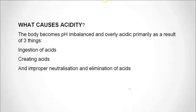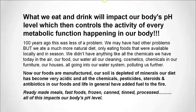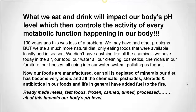A hundred years ago this was less of a problem. We ate a much more natural diet — only foods available locally and in season. We didn't have anything like the chemicals we have today in the air, our food, our water, cleaning products, cosmetics, chemicals in our furniture, our houses, paint — all going into our water system and polluting us further. Now our foods are manufactured, our soil is depleted of minerals, our diet has become very acidic, and pesticides, steroids, and antibiotics in our foods have added fuel to the fire. Ready-made meals, fast foods, frozen food, canned, tinned, processed foods — all of this impacts our body's pH level.